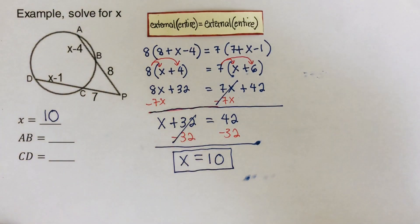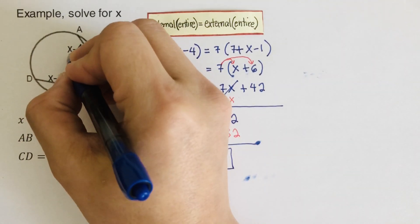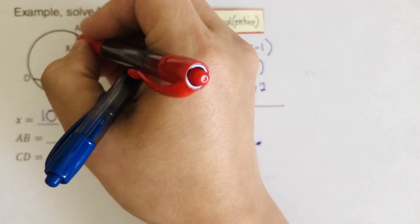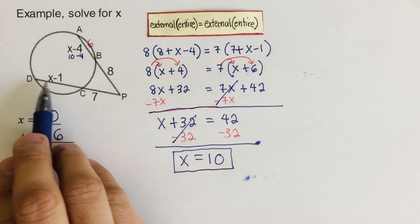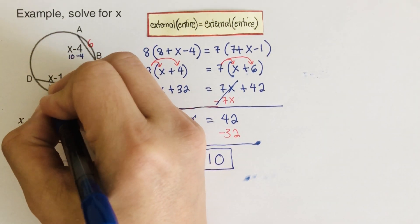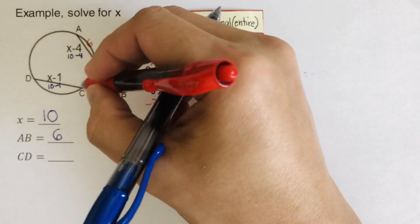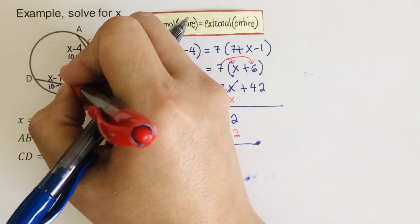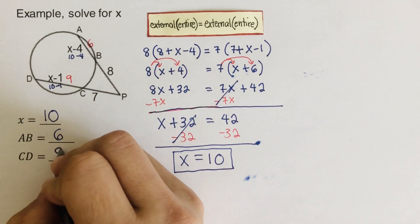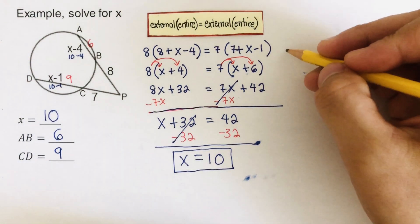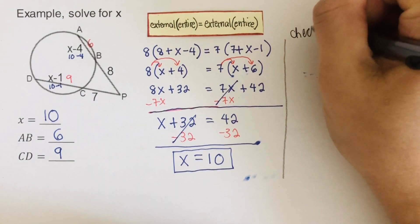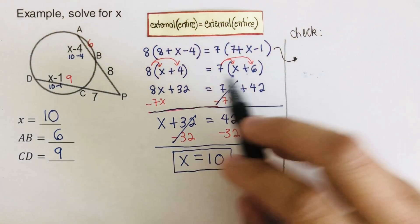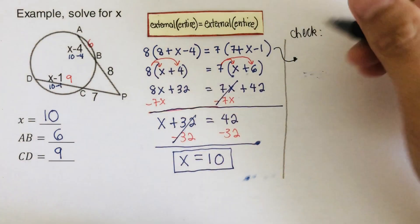Now we find the actual segment lengths by plugging x = 10 into the expressions. For AB: x minus 4 equals 10 minus 4 equals 6, so AB = 6. For DC: x minus 1 equals 10 minus 1 equals 9, so DC = 9. We can now check our answer by plugging x = 10 back into the original equation.